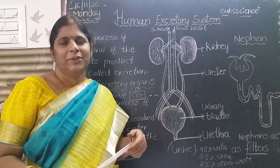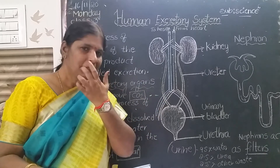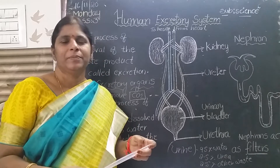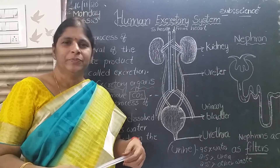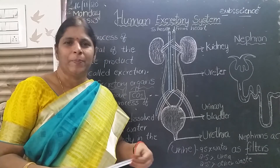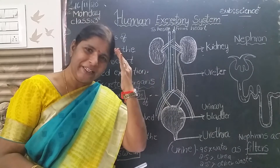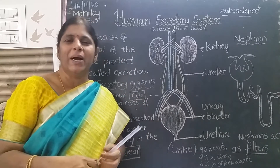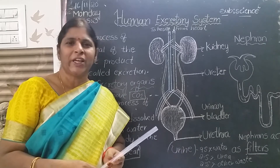Coming to the lesson, what did I teach you day before yesterday, children? About Diwali? What is the name of the previous lesson? About the nervous system. What is the nervous system made up of? The nervous system is made up of brain, spinal cord, and bundles of nerves.